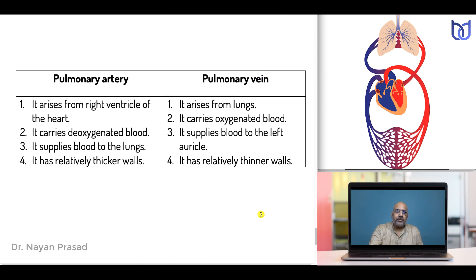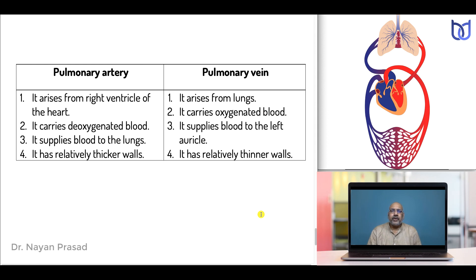Differences between pulmonary artery and pulmonary vein: The pulmonary artery arises from the right ventricle of the heart, while the pulmonary vein arises from the lungs. The pulmonary artery carries deoxygenated blood; the pulmonary vein carries oxygenated blood. The pulmonary artery supplies blood to the lungs, while the pulmonary vein supplies blood to the left auricle. The pulmonary artery has relatively thicker walls; the pulmonary vein has relatively thinner walls.